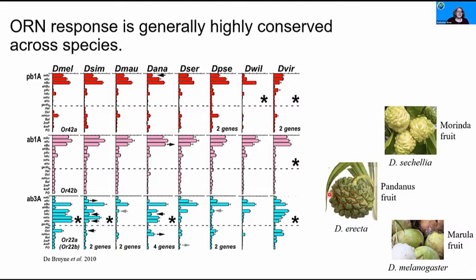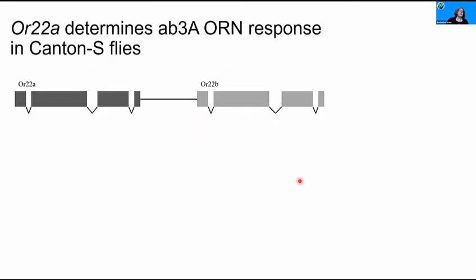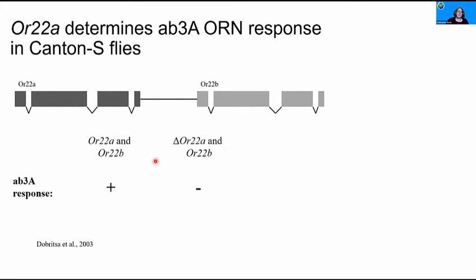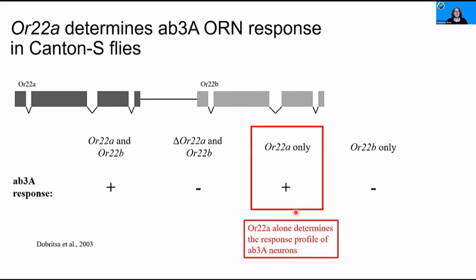The AB3A neuron has been heavily implicated in host specialization — for example, Drosophila sechellia being specialized on the Morinda fruit, and Drosophila erecta and D. melanogaster on the pandanus and marula fruit respectively. In D. melanogaster, the odorant receptor locus controlling AB3A response is the OR22 locus. In the laboratory stock Canton S, there are two genes: OR22A and OR22B. When both genes are present, AB3A responds normally. When both are absent, there is no AB3A response. When only OR22A is present, we get a normal AB3A response, but OR22B alone gives no response. This has led to the conclusion that OR22A alone determines AB3A response.